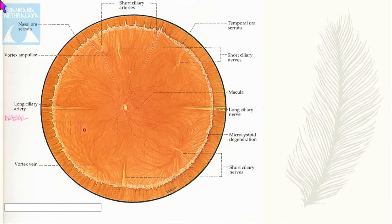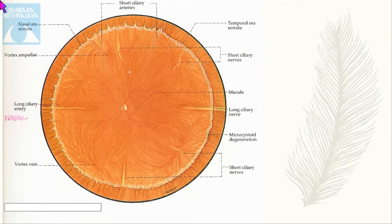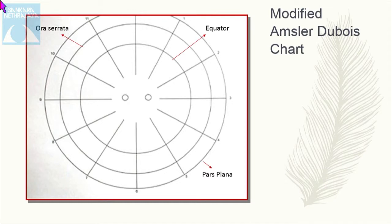For postgraduates, here we can see the optic disc and the macula. The short ciliary nerves are actually very difficult to identify, but you can see the vortex vein ampulla, which suggests the equator. By indentation, you can see the ora. This is a modified Amsler-Dubois chart with three concentric circles. The inner circle represents the equator, the middle circle represents the ora, and the outer one represents the pars plana. Always draw the right eye on the right side and the left eye on the left side.